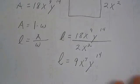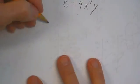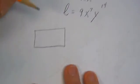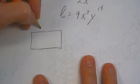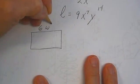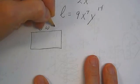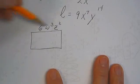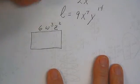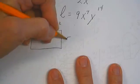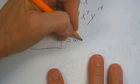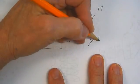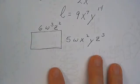It's even easier if they give you something like: You have a rectangle. The length is 6w cubed z squared and the width is 5w x squared y z cubed. What's the area of the rectangle?